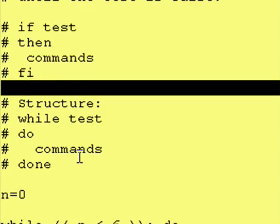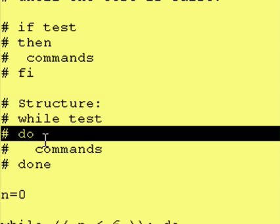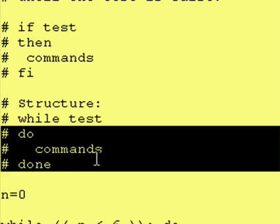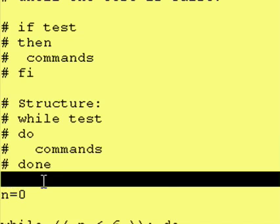Today we're going to look at the while loop, which is very similar to the if test. Here's the way it works. We run a test. If this test is false, then we skip over everything from the do, the commands, and the done, and then we go down and start running our program from after where the done would be.